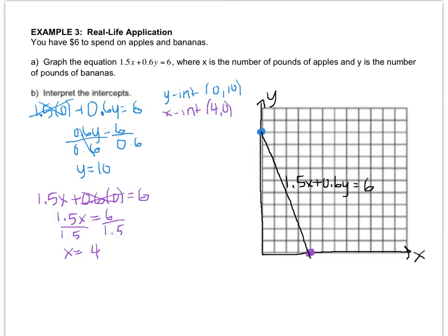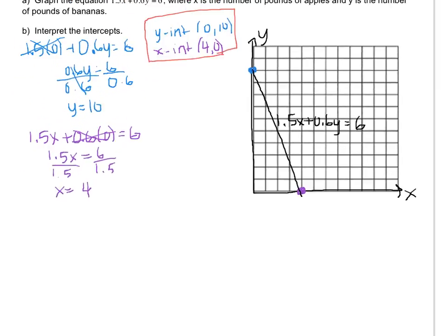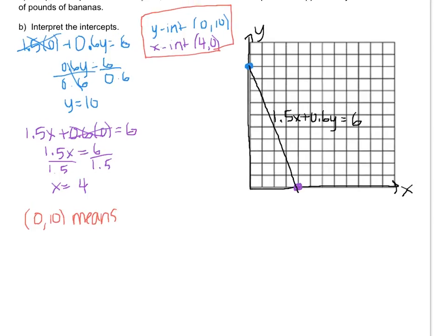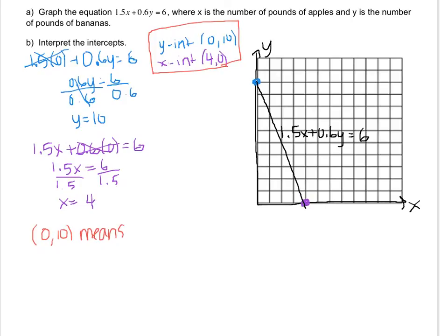Now the last thing that we have to do is to do part B, which is interpret the intercepts. So now, since I have the intercepts right here, I can just write a sentence about them. So the first sentence is going to say 0,10 means. So remember that the 0 stands for the x value, and x stood for apples, and y stands for bananas.